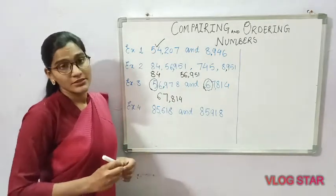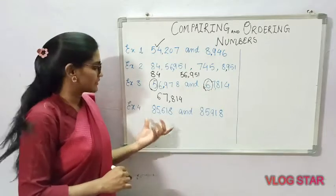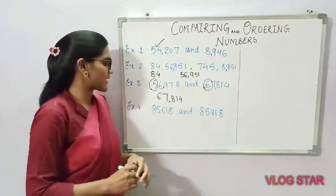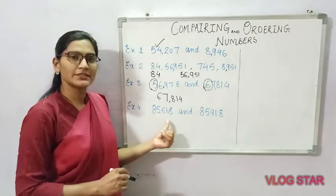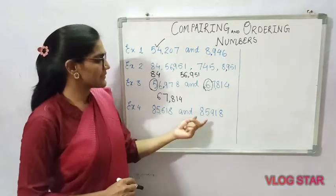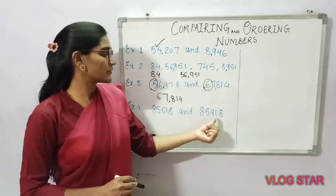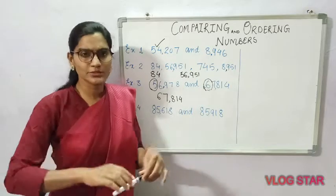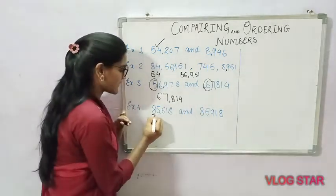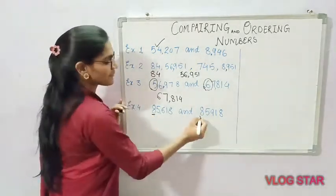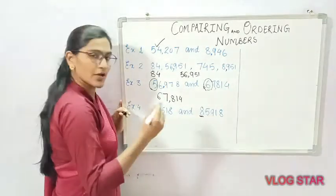Now another scenario: if the starting digits are equal. For example, 85,618 and 85,918. We compare the ten-thousands place — both have 8, they are the same. So we move to the next place value.